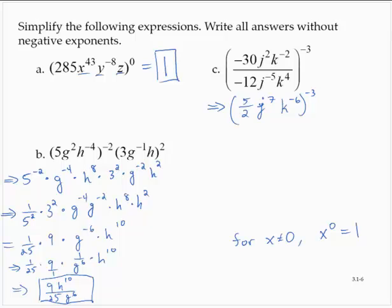So I have 5 halves to the negative 3rd. I have j to the negative 21st power. And I have k to the 18th power.